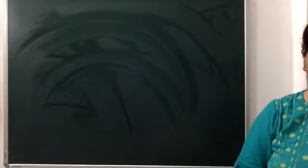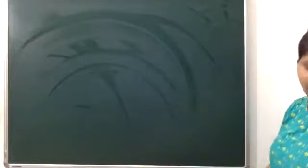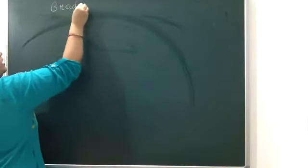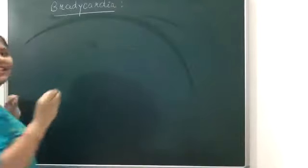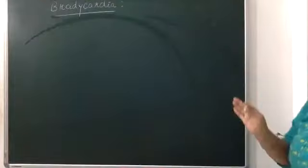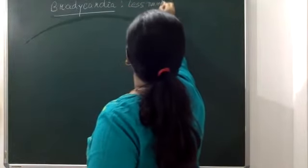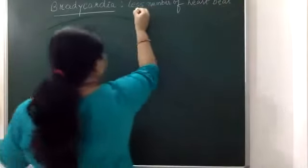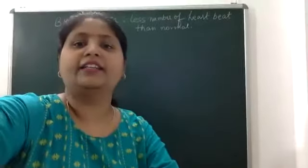Under certain conditions your heartbeat increases. The normal heartbeat in humans is 72 per minute. If the number of heartbeats is less than normal, that is known as bradycardia. If the number of heartbeats is more than normal — more than 72 per minute — that condition is known as tachycardia. These are abnormal conditions.